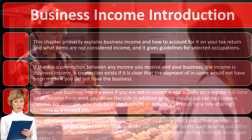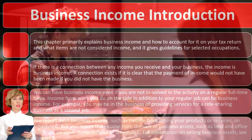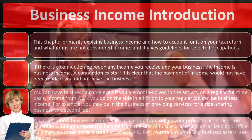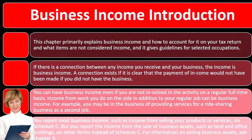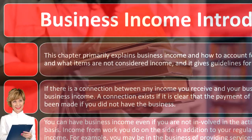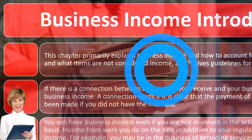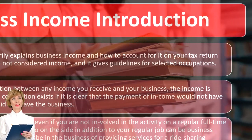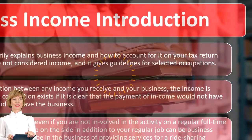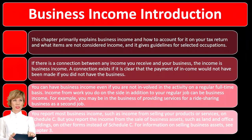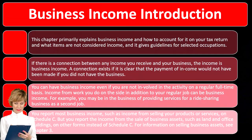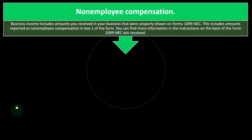However, you report income from the sale of business assets — such as land and an office building — on other forms instead of Schedule C. Meaning, if you had something on the books that you had to capitalize and record depreciation for, and then you sold that equipment, for example, you might have to report it on other forms to record the gain or loss for those particular sales, as we saw in prior presentations. For information on selling business assets, see Chapter 3.